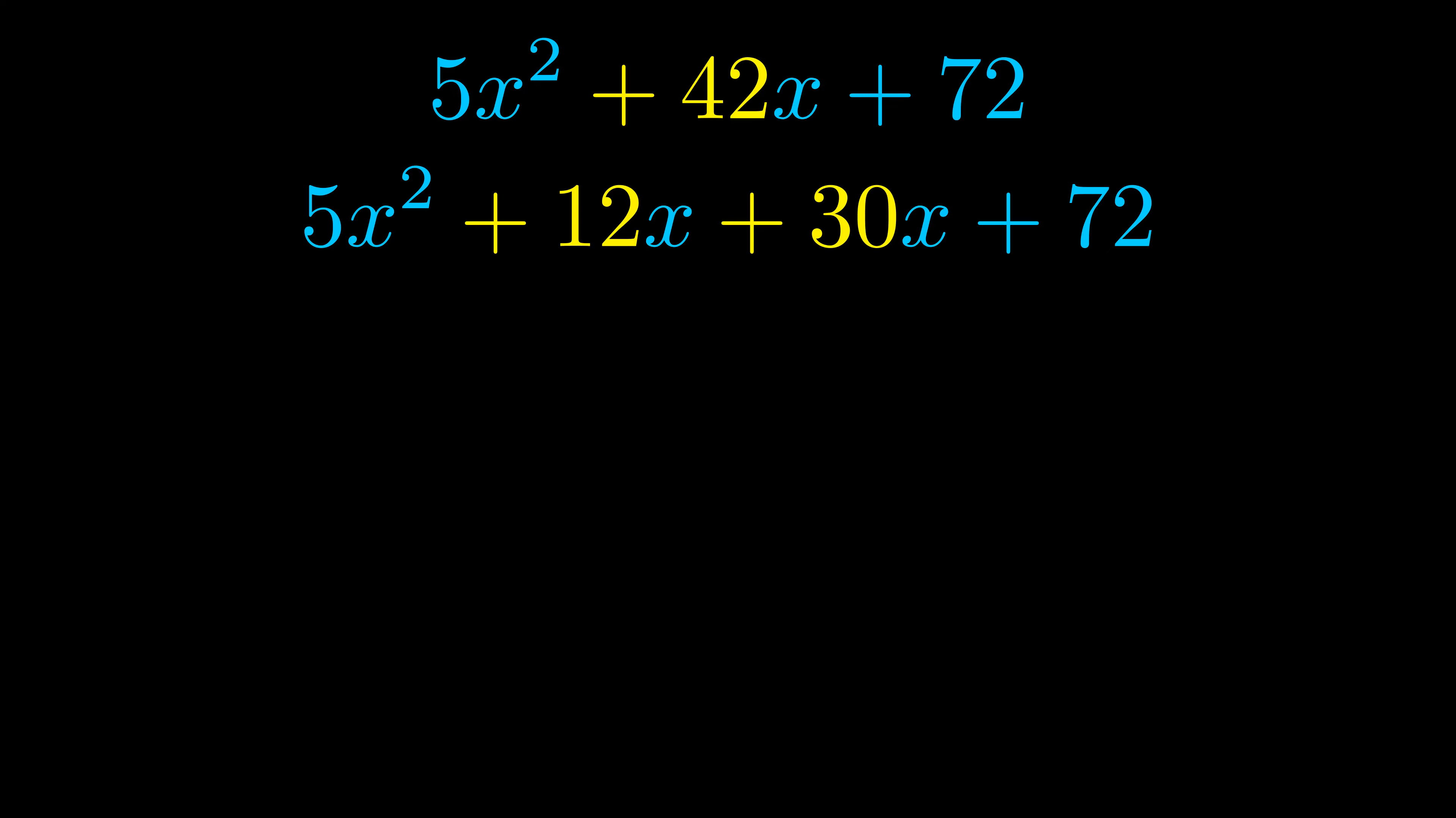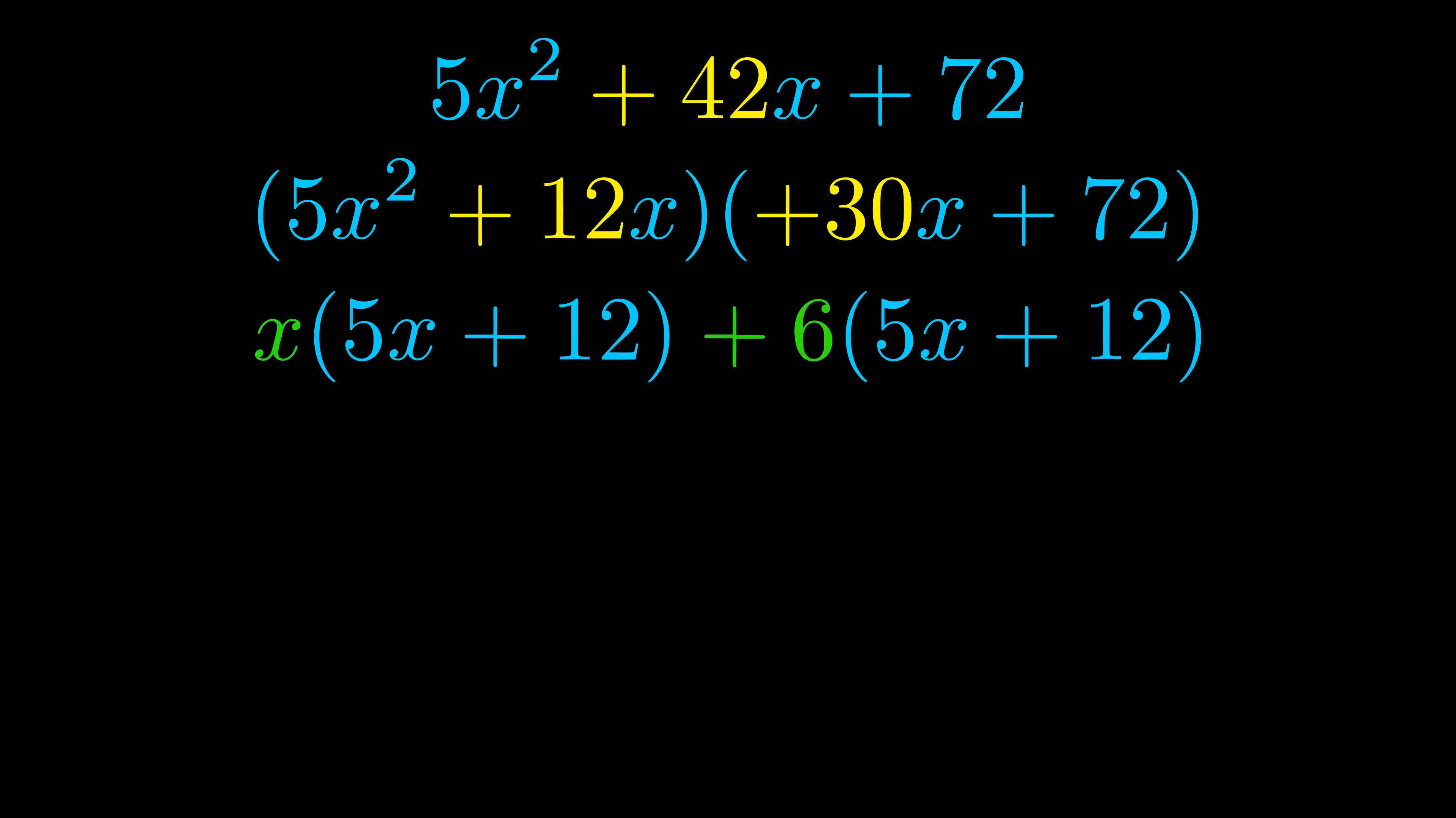Once we've done this we go ahead and we put parentheses around the first term and the last term. And we do that so that we can take the greatest common factor out of both terms. We can see the greatest common factor is now outside in green. Notice also how what remains inside of the parentheses is the same in both cases.